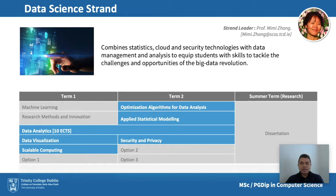The second strand is data science — one of the most popular strands, easily receiving about a thousand applications each year for just 40 places. This strand leverages the school's unique combination of experts in statistics and computer science. It deals with how to gather and store data using computing technologies and sensors, how to process it using statistics and machine learning, and how to deliver new insights through data visualizations. The strand combines statistics, cloud and security technologies with data management, addressing many of the skills and opportunities of the big data revolution.